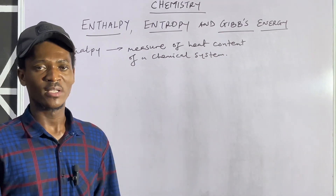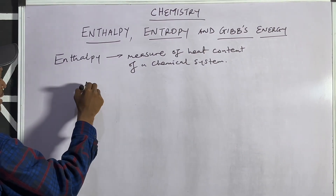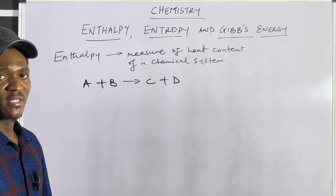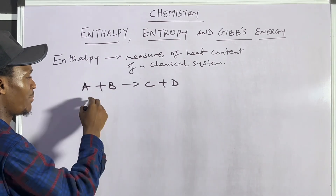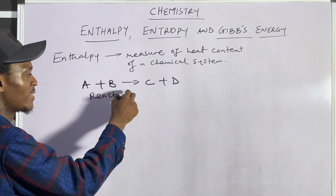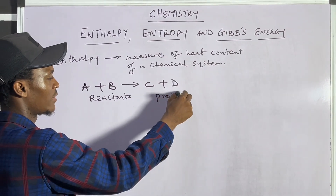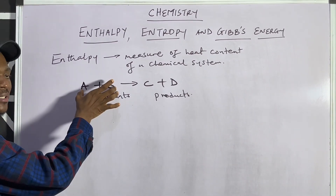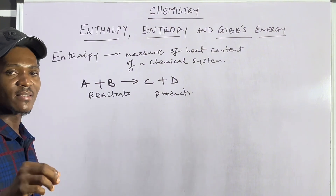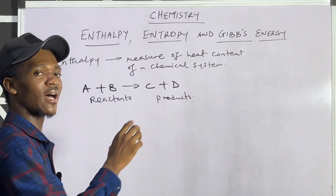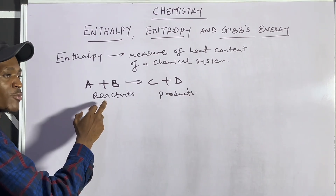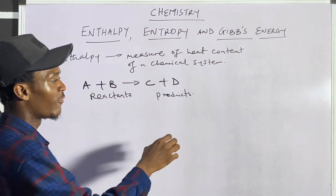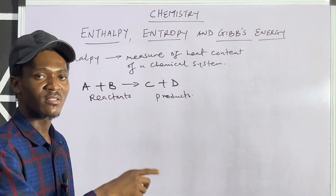When I say heat content of a chemical system, I'm referring to that of a chemical reaction. Let's say we are having A plus B to give C plus D. For the reactants, which are A and B, and for the products, which are C and D, when there is application of heat, heat needs to be applied in order to break bonds of the reactants, and then heat is usually released when products are formed.